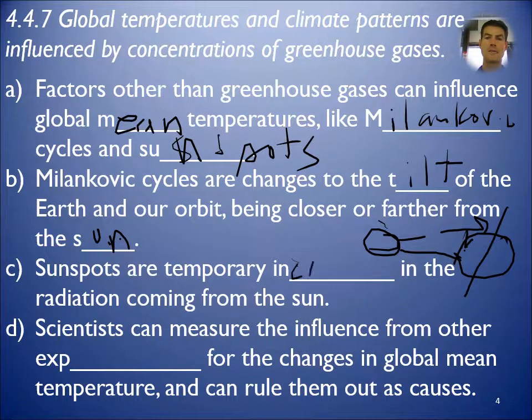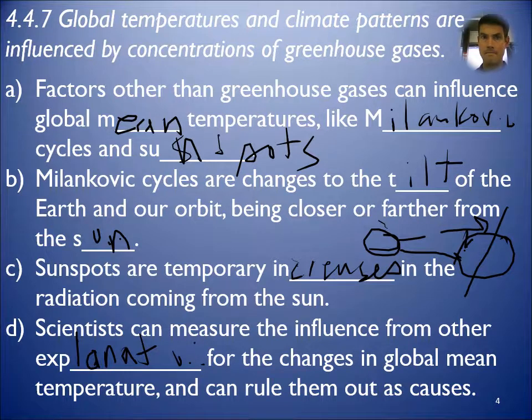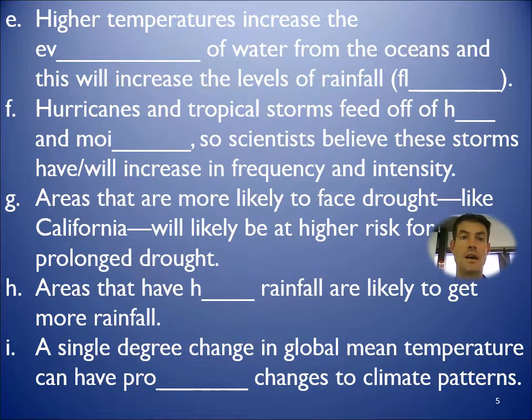And the sunspots, temporary increases in the radiation coming from the sun. And science can measure the influence. Scientists can measure the influence. These are other explanations, right? Like is it really CO2, or is it these Milankovitch cycles? Is it the orbit of the Earth around the sun? Are we getting closer? And scientists look at those. They can't find any evidence that those Milankovitch cycles, or sunspots, are significant enough to be responsible for that change in climate. So they can be ruled out.